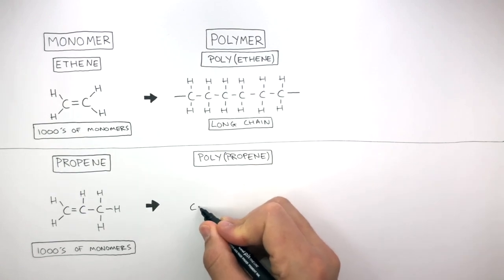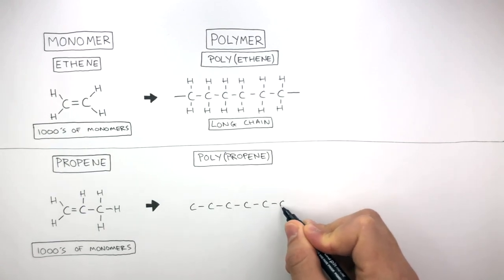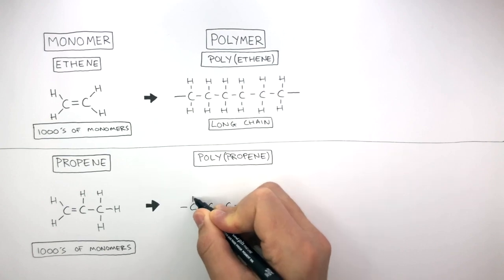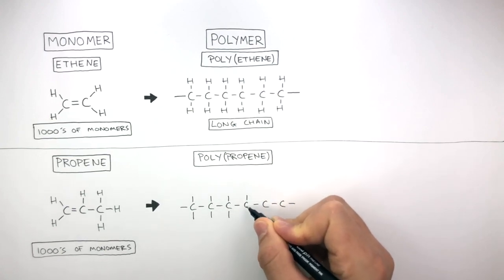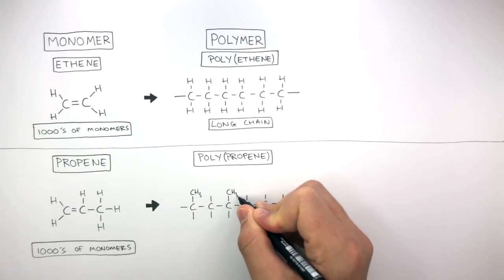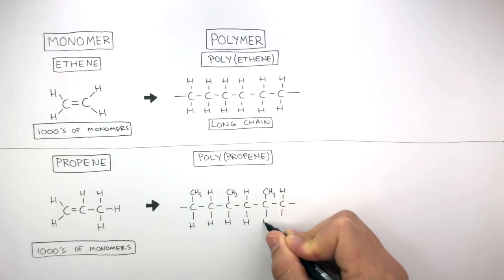We can see how the main chain consists of carbon atoms with single covalent bonds between them. And every two carbon atoms consists of a CH3 group and three hydrogen atoms due to the monomer being propene.